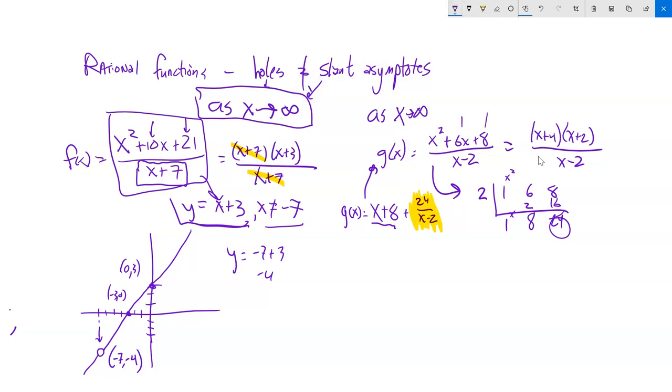So essentially, as x gets really big, this thing starts to settle down to this line, y equals x plus 8. It doesn't equal it. It's an asymptote. It's what it gets closer and closer to, extreme behavior. So if I go to graph this one then, I know I have a slant asymptote at this line, y equals x plus 8. So here's the 0, 8, 0, negative 8. And the function doesn't go through those. I just know that I have a slant asymptote there.